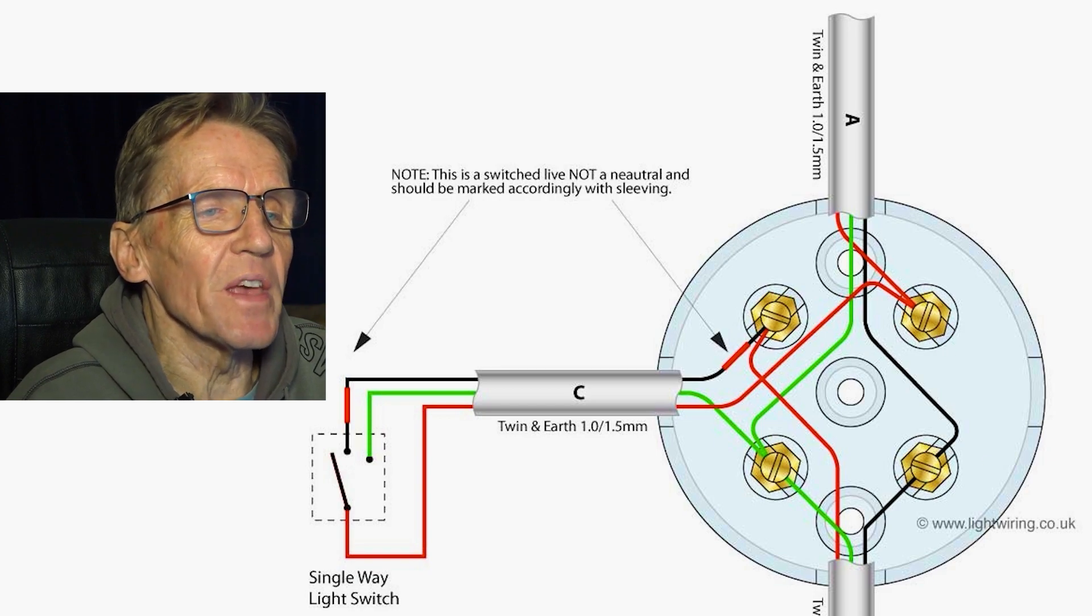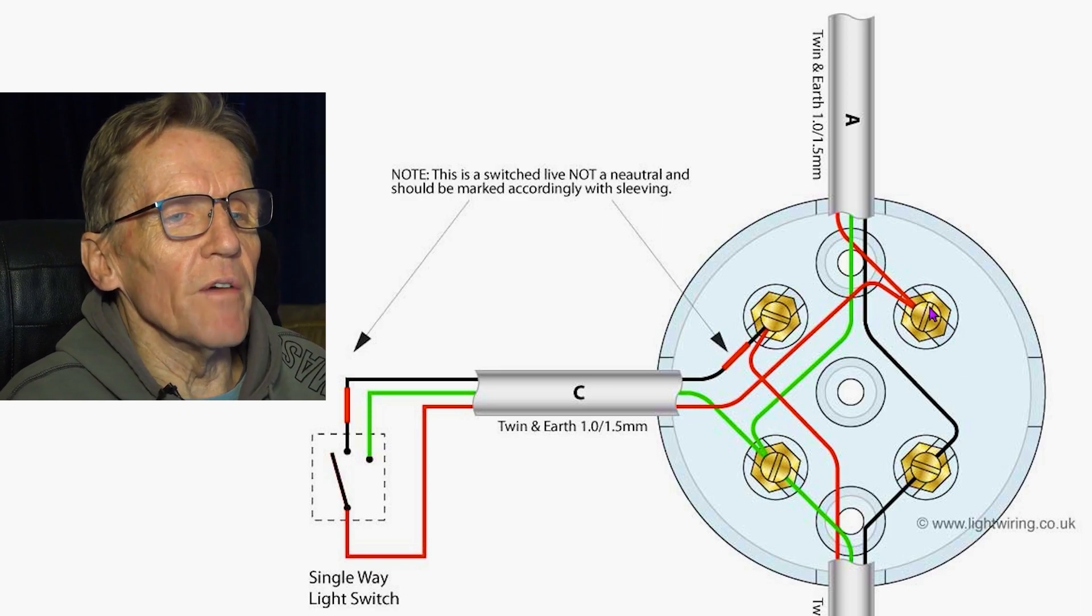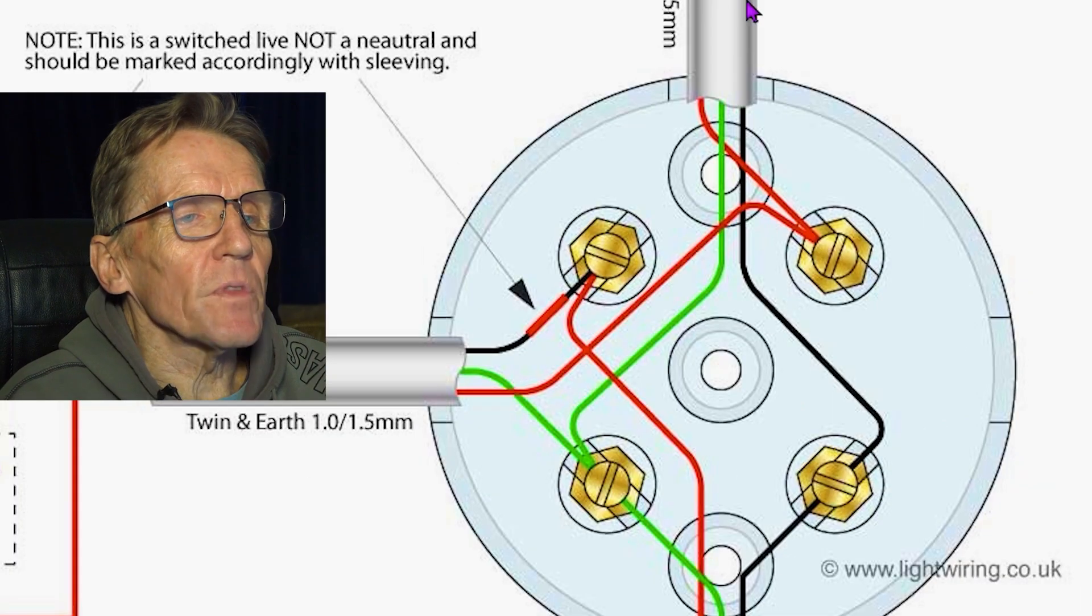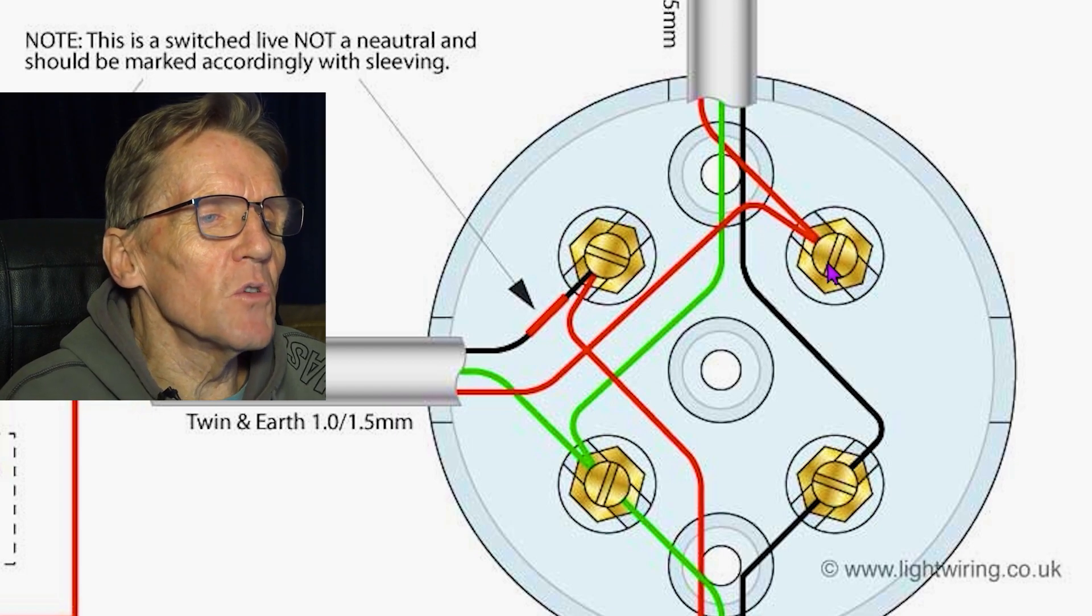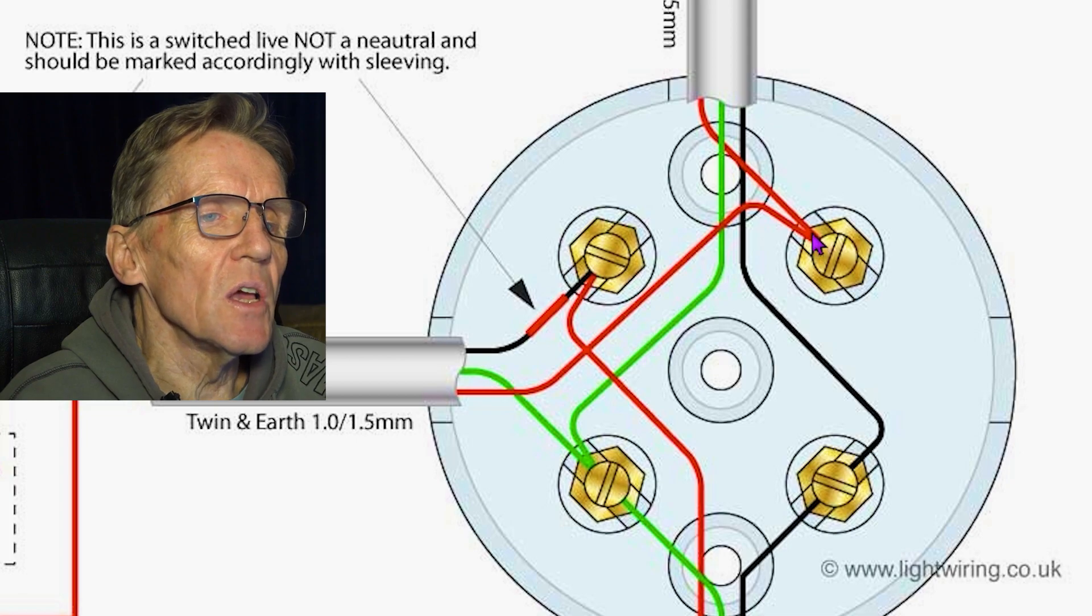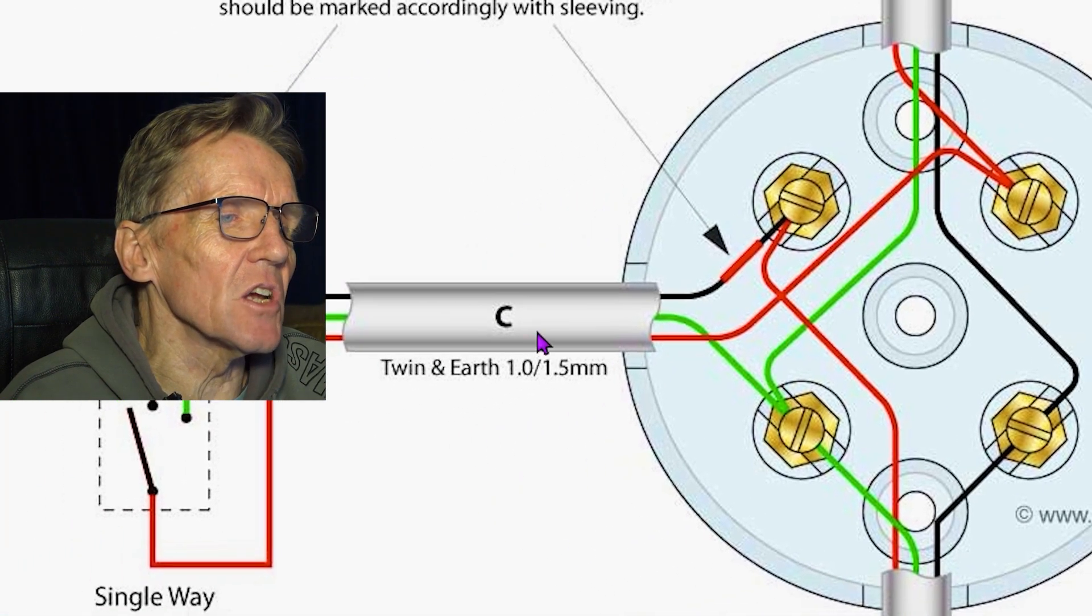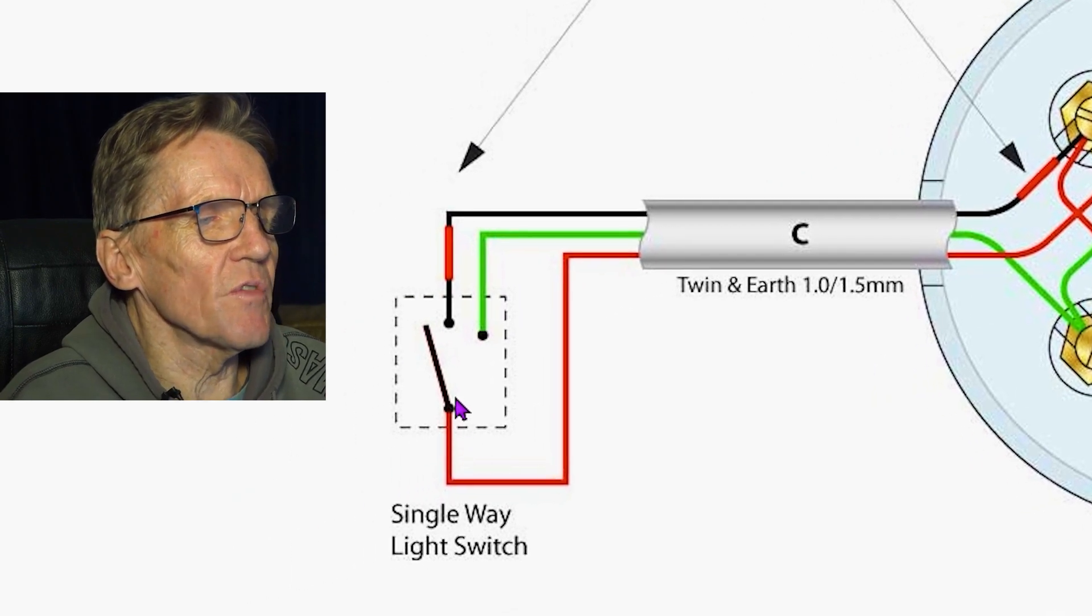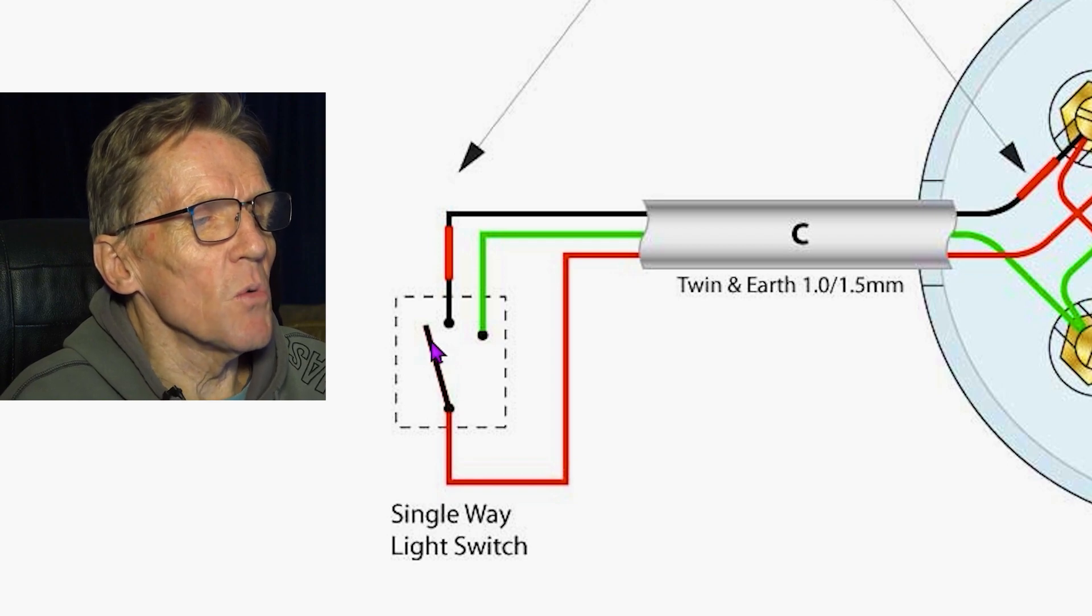Or this could be the one on the end of the line, in which case you wouldn't have another wire coming out—it would look like this. So when that wire comes in, that live needs to go down to the switch. So there's a live conductor going down to our switch, and our switch is just a very simple on-off switch here, nothing fancy, no two-ways.